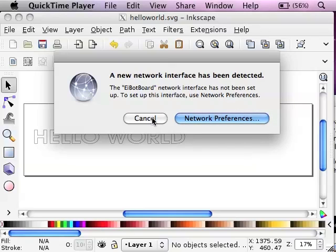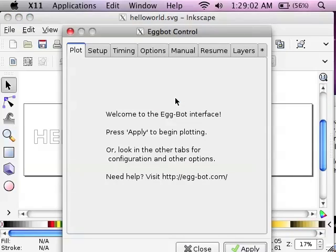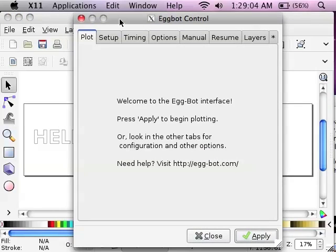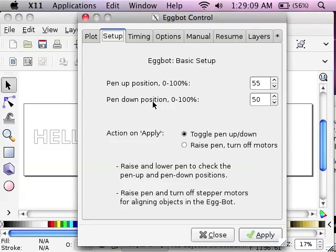The new interface has been detected. It wants to use as a network interface, but it's not a network interface. Don't let it. So, Extensions menu, Eggbot, Eggbot Control, and then in the Setup tab, we're going to choose Action on Apply is to toggle the pen up and down. Our pen positions are set as 50-55%, and that's just a guess, first guess of what it will be. If I hit Apply, let's see what it does.